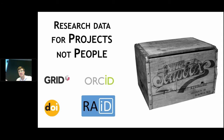From the start of this project, we were very keen to say that research data is associated with projects and not people. This is because institutions are responsible for the outputs of research beyond the time when the researchers have left. So we knew we had to structure the RAID identifier around that idea.